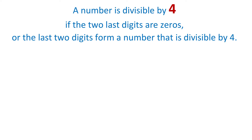A number is divisible by 4 if the last two digits are zeros, or the last two digits form a number that is divisible by 4. For example, the number 600 is divisible by 4 because the last two digits are zeros. 600 divided by 4 is 150. The number 916 is also divisible by 4 because the last two digits are 1 and 6, and 16 divides by 4. Then 916 divided by 4 is 229.